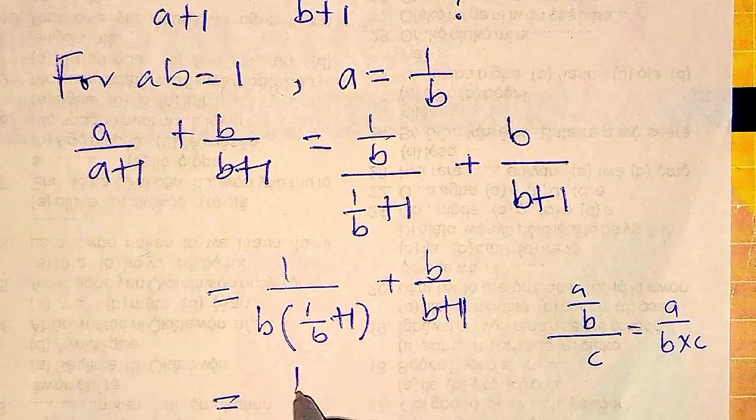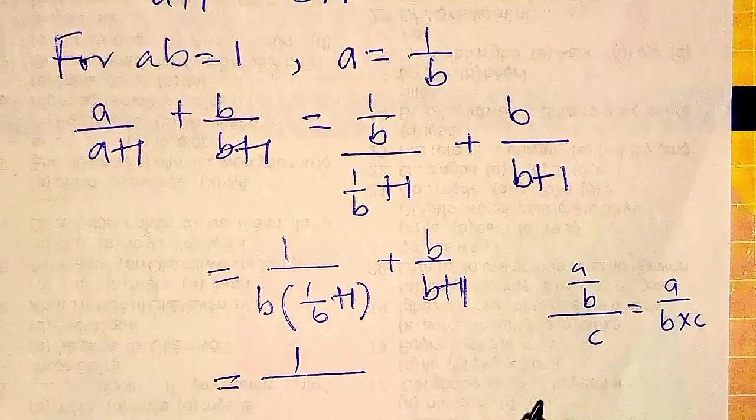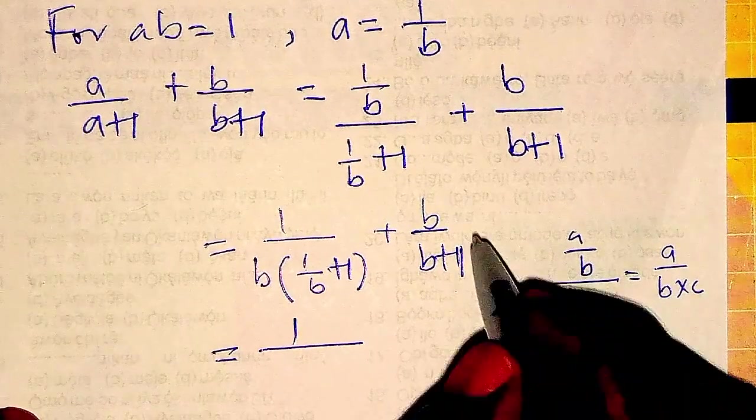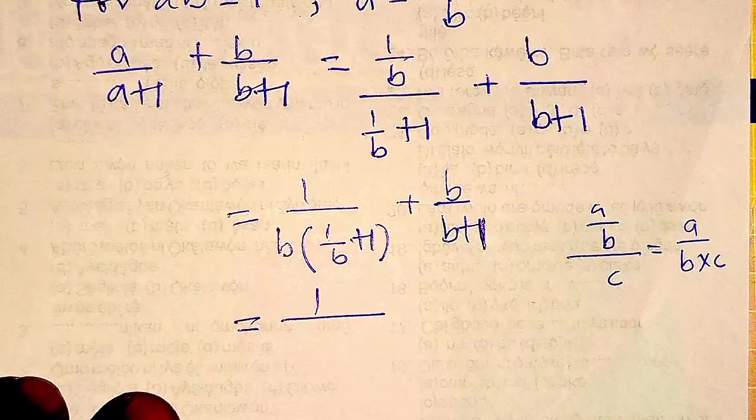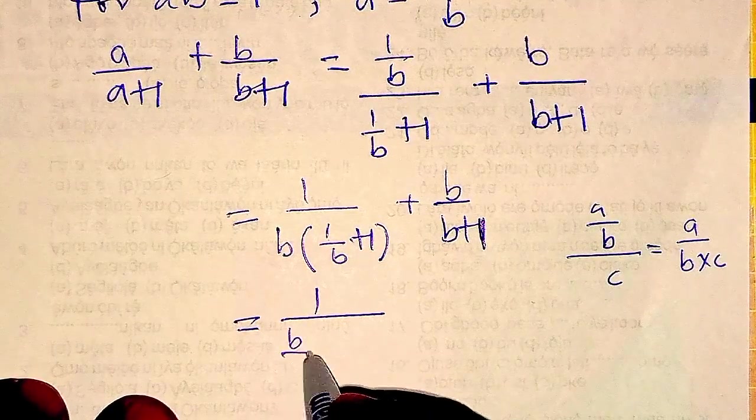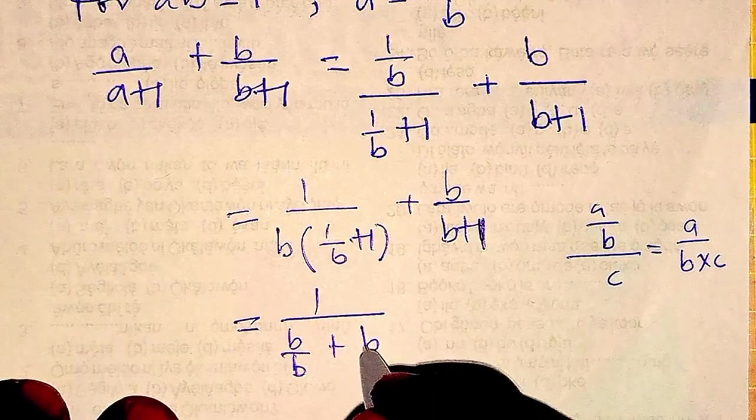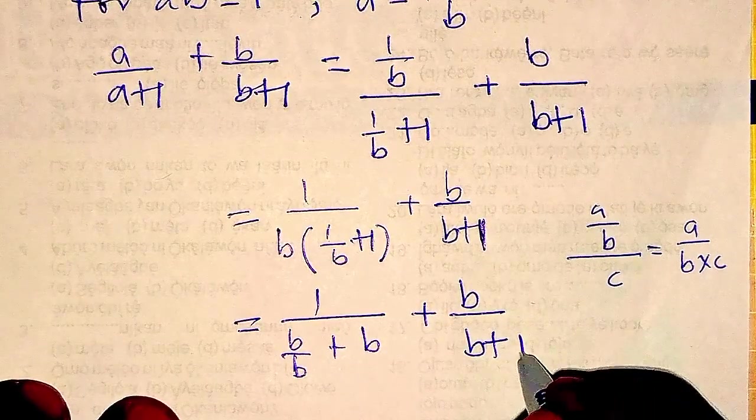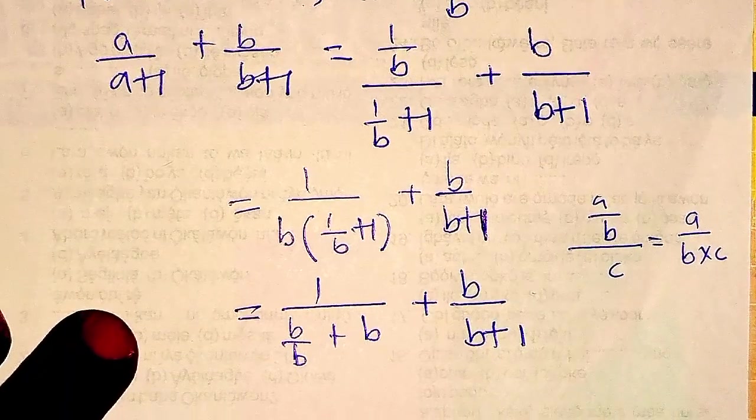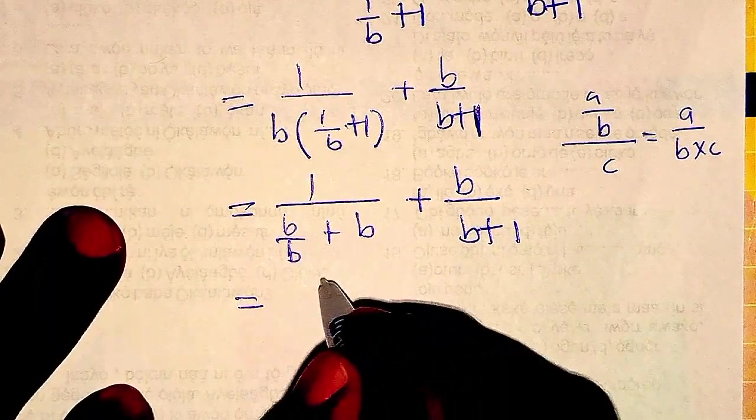So now from here, we are going to be having B over B plus B times 1, we have B plus B over B plus 1. Are you following? So we have B divided by B, that is 1.